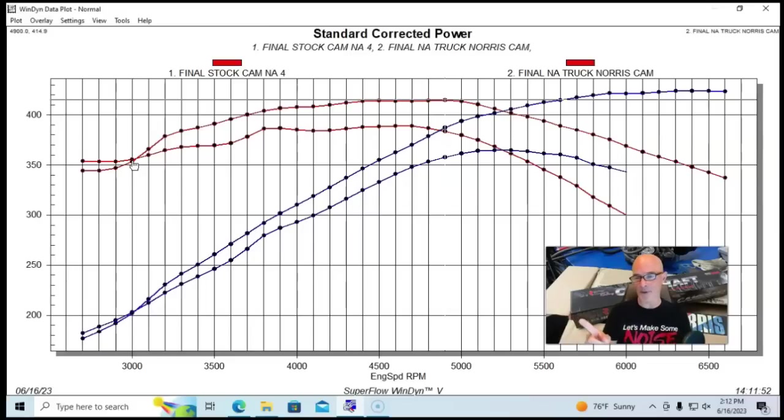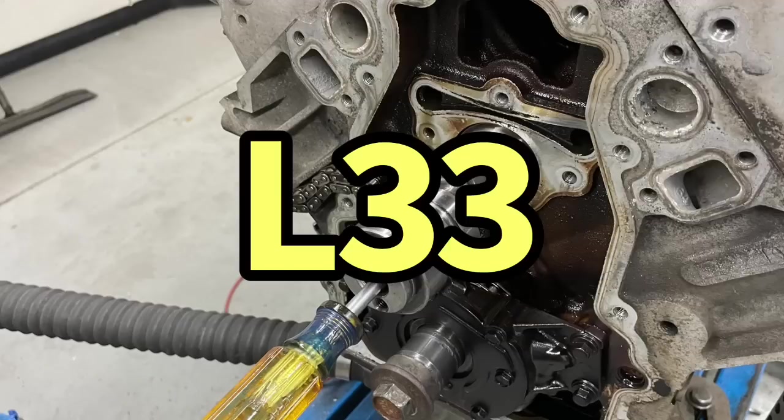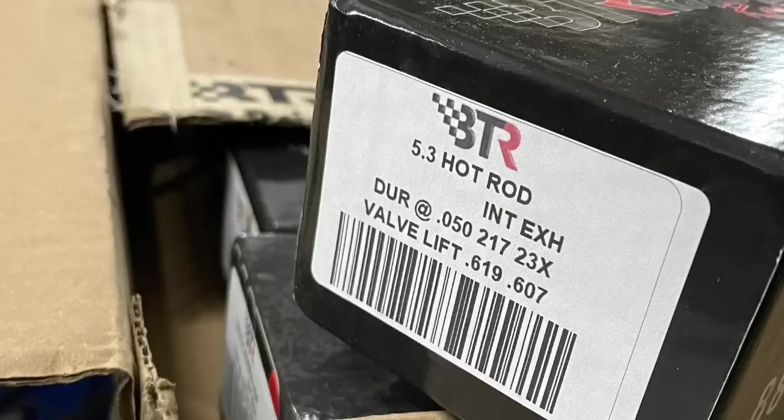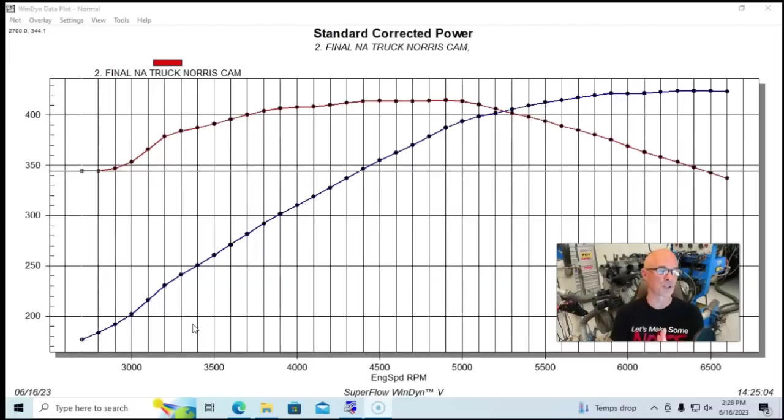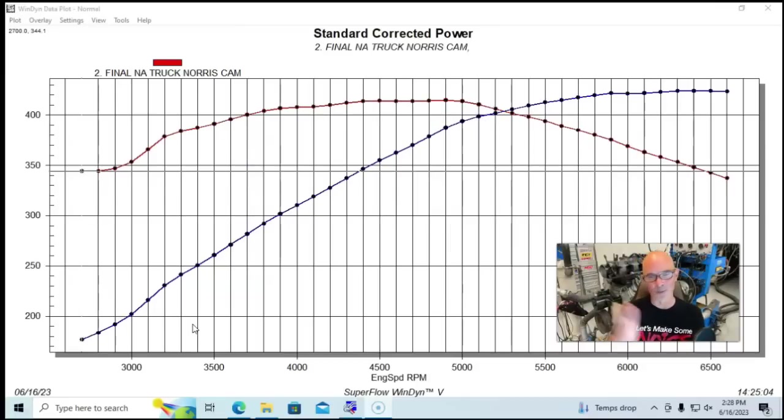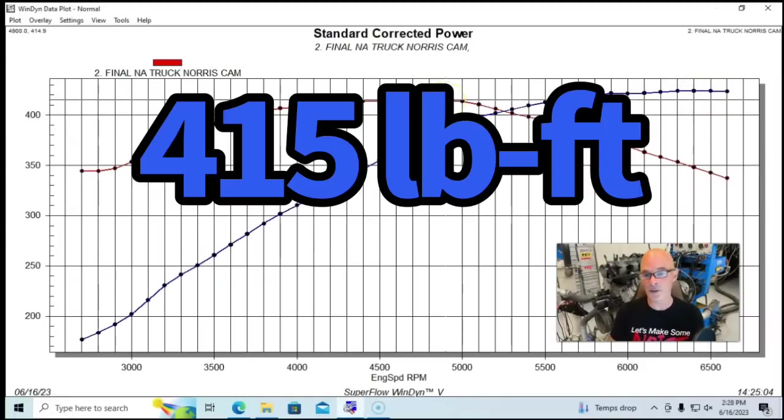But now let's take a look and see what happens when we go up in camshaft from the Truck Norris. Now that we're taking a look at a comparison between the stock L33 camshaft and the Truck Norris cam from Brian Tooley Racing, we're going to step up in camshaft size to their Hot Rod cam. And it should be noted that the Hot Rod cam and the Red Hot cam, which we're also going to show you, these were actually designed for LS3 motors. And I told Brian that we were going to run them on the 5.3. He's like, okay, good, let's give it a try. And they did fairly well, but know that these were not designed for that. But we're going to see how they perform. So this was our combination with the Truck Norris cam. It was 424 horsepower, 415 foot-pounds of torque.